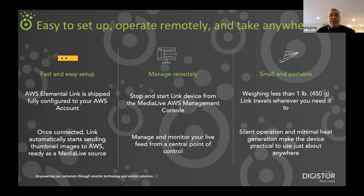So really, in terms of the process, it's fast and easy to set up. The Elemental Link device is shipped fully configured to a specific AWS account, and it automatically phones home to the MediaLive service in that account as soon as it's connected. Once the Link device is connected — and you may have multiple devices in multiple different venues — you can manage them remotely. They will all appear in the AWS console with thumbnail images so you can preview the video arriving from the ground site, and then you can start and stop streaming at will. The devices weigh less than 450 grams, which means they're super easy to ship anywhere. There's nothing to configure on the device itself apart from configuring an IP address if needed. All of the configuration is done through the cloud interface.